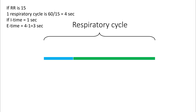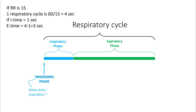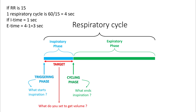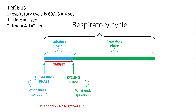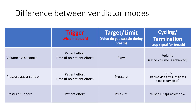If your respiratory rate is set at 15, your respiratory cycle is around 4 seconds. If your I time is 1 second, your E time is 3 seconds. So your respiratory cycle has two phases: inspiratory phase and expiratory phase. The triggering phase tells the ventilator when to start inspiration, and the cycling phase tells the ventilator what to look for to end that expiration. The target is the parameter you set to get the volume — volume is not the target, it's the end product. Volume is determined by both target and cycle. Expiration is passive on the ventilator. Different vent modes differ because of different triggers, different targets, and different cycling patterns.